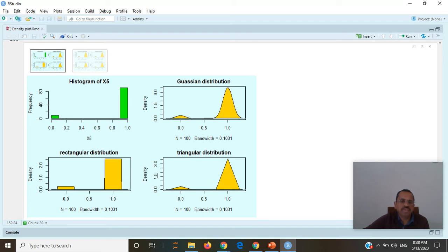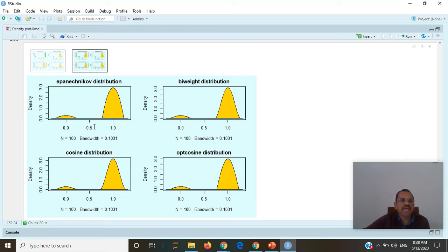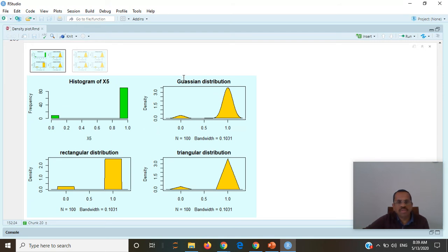These are distributions we can use. It is a Gaussian distribution. This is a rectangular distribution and this is triangular distribution. These are some other distributions which we do not use that commonly. Most commonly used distribution is Gaussian.